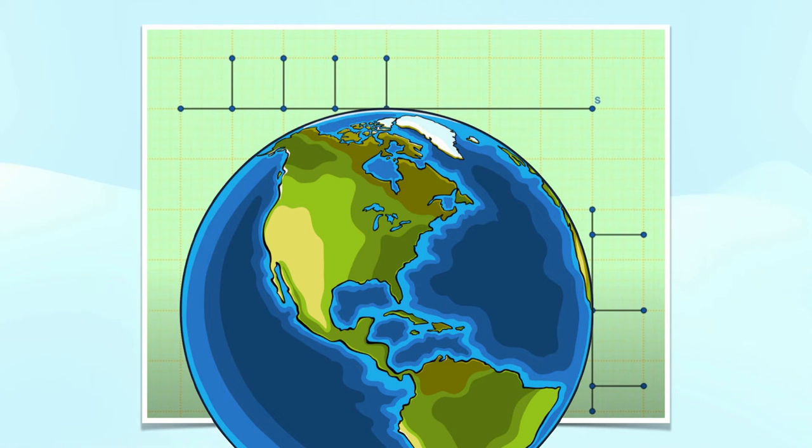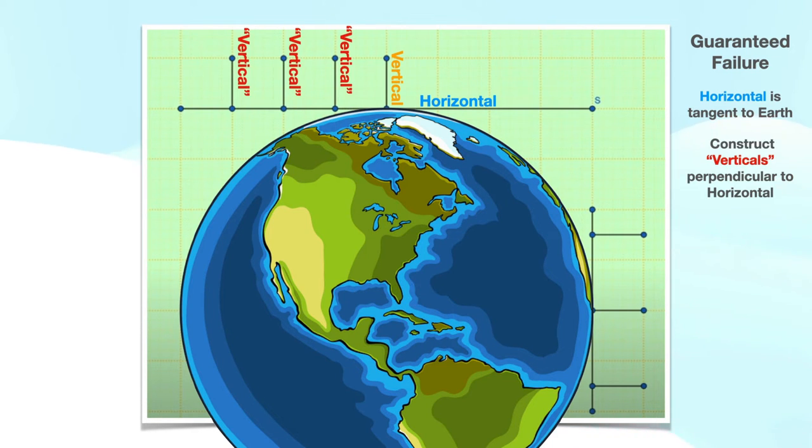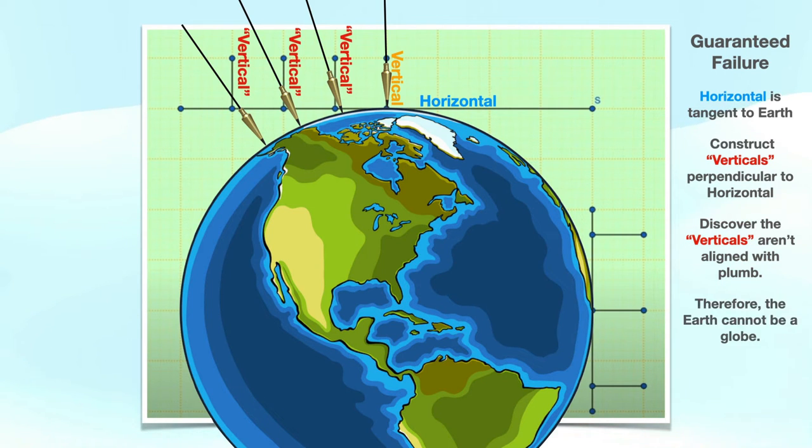Let's approach this again using Brian's straw man version of the globe. Well, this method is a guaranteed failure. Construct a horizontal tangent to the Earth. Construct quote-unquote verticals perpendicular to the horizontal. Clearly, these quote-unquote verticals really aren't vertical, as they're not aligned with plumb. Therefore, Brian says Globers have a tangent paradox.